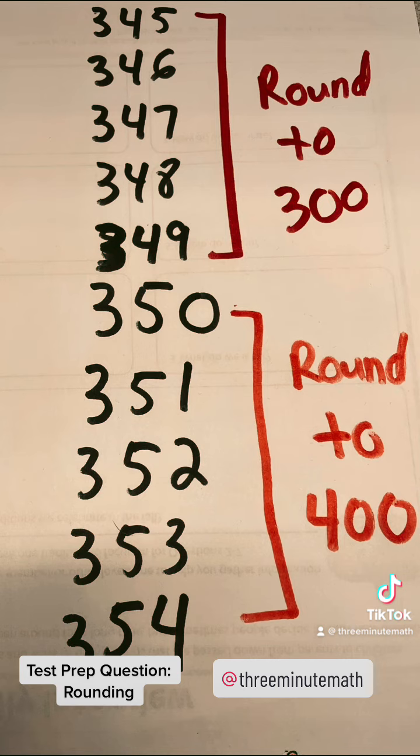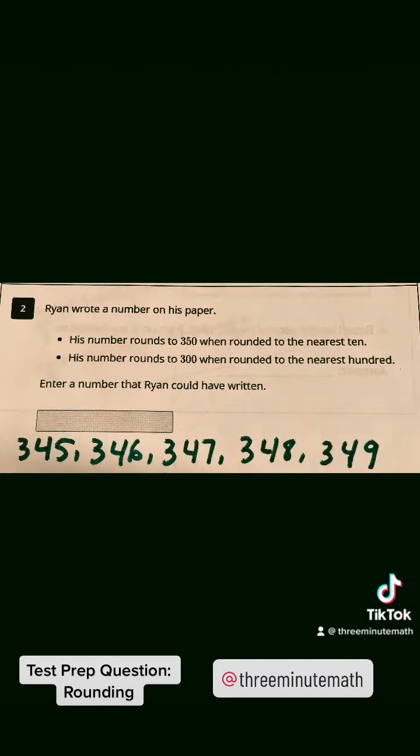So again, as a reminder, we're looking for numbers that round to 350 when rounded to the nearest 10 and round to 300 when rounded to the nearest 100. The five numbers that meet both those criteria are 345, 346, 347, 348, and 349. Any of those numbers would work for your answer.